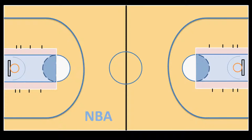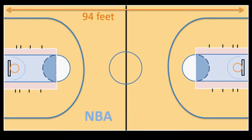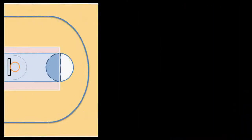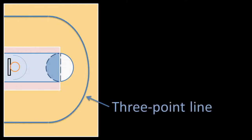We'll start with the court as a whole. From one baseline to the other baseline, the court is 94 feet in length, and a basketball court is 50 feet wide. If we zoom in to one side of the court, from the backboard to the three-point line is 23 and three-quarter feet. The three-point line is not a perfect half circle, so it gets slightly closer to 22 feet in the corner.